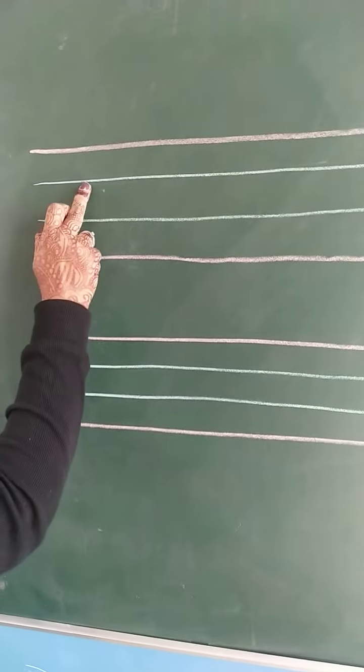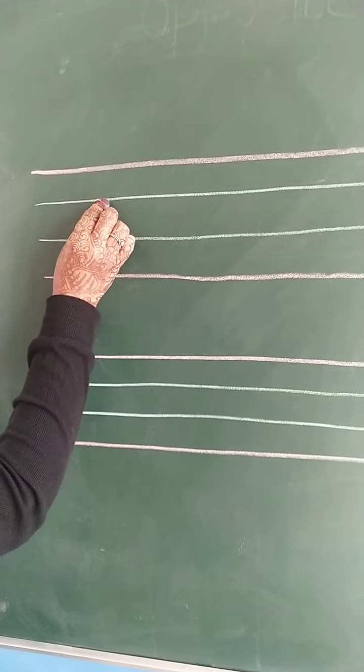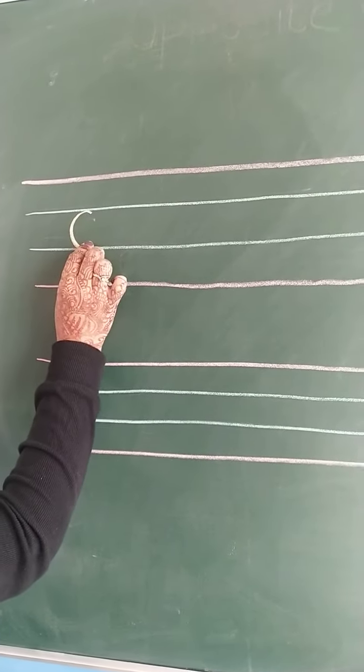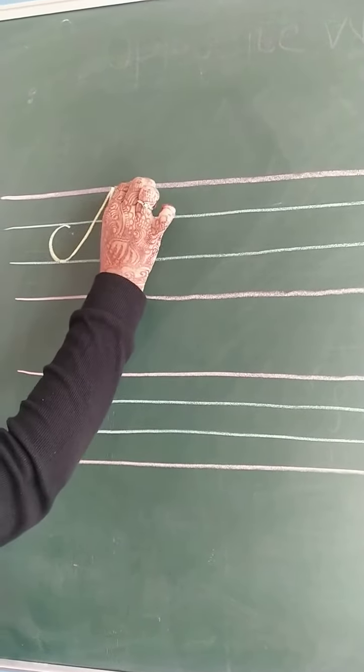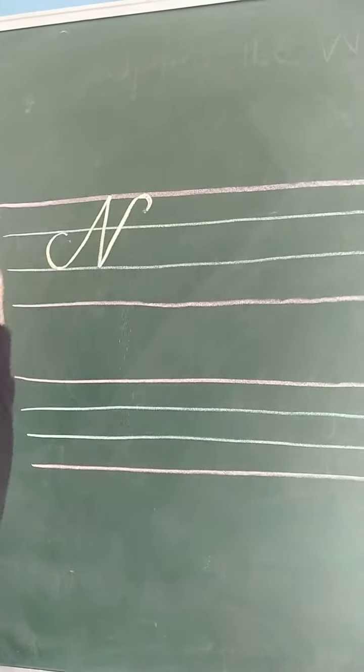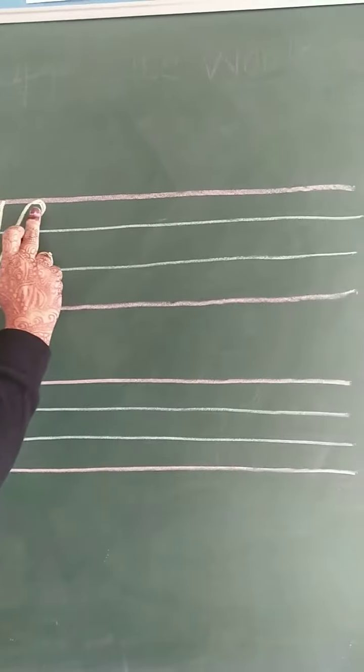Start from this second line. Make a curve like C, then go up. Come down, go up, and finish it with a curve. Like this.